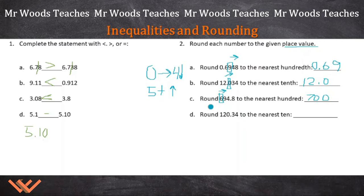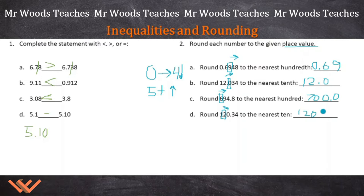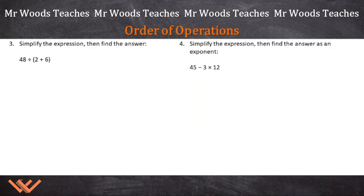Round 120.34 to the nearest 10. The tens place is right here, and we look to the right, which is 0. So we round down and it's just going to be 120. You could add 120.0 or 120.00 — it's still the same. Some teachers may want you to carry the decimal out, but 120 is acceptable here.